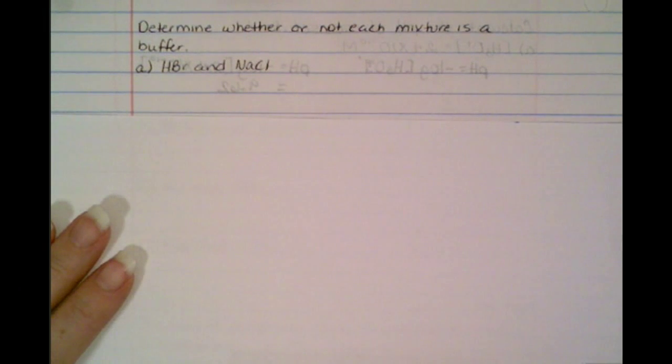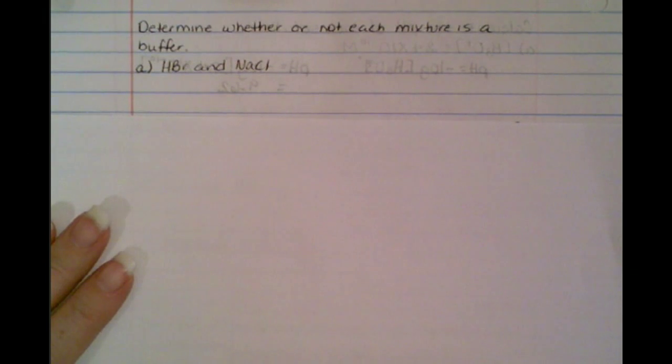We want to be able to identify whether or not two things make a buffer. This is only identification — you don't have to actually solve anything. I just want you to know how to determine whether or not, if I mix two substances together, I'm forming a buffer. Remember, a buffer has to do with a weak acid and its conjugate base.